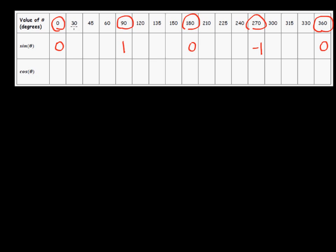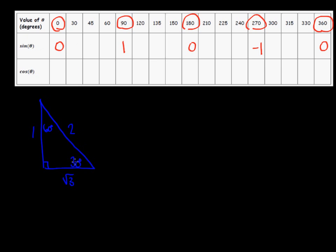To fill in the rest of the table, we notice that we're working with related acute angles of either 30, 45, or 60 degrees, based on our special triangles. One special triangle has angles of 30 degrees and 60 degrees. Opposite the 30 degrees is the shorter side of length 1, opposite 60 degrees is root 3, and the hypotenuse is 2. So sine of 30 degrees is opposite over hypotenuse, or 1 over 2, which is 0.5. For 60 degrees, the sine ratio is root 3 over 2, which equals about 0.866.